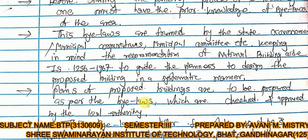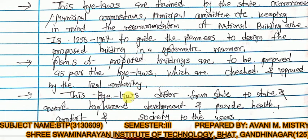Before planning any building, you must have proper knowledge of building bylaws. After planning, the plan must be checked and approved by the local authority. For example, if you have a plot, you plan a building according to the bylaws, and then it is checked and approved — in Ahmedabad this is done by AUDA and the town planning department — and only after approval can construction begin.